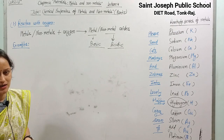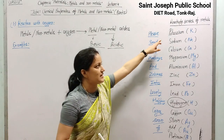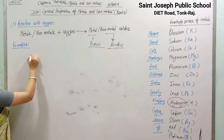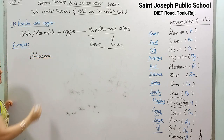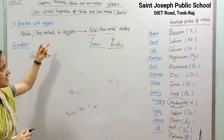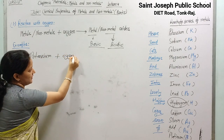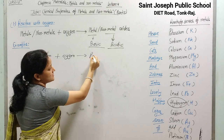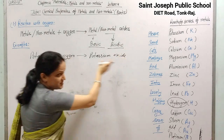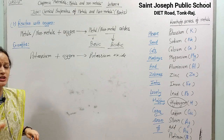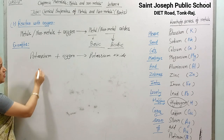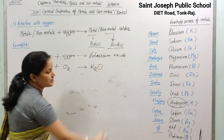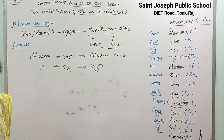Now let us understand these reactions with the help of word equations and chemical equations, starting from the first metal: potassium. Word equation: Potassium + Oxygen → Potassium oxide. Converting to the chemical equation using symbols and formulas: the symbol of potassium is K, symbol of oxygen is O₂, and the formula of potassium oxide is K₂O.